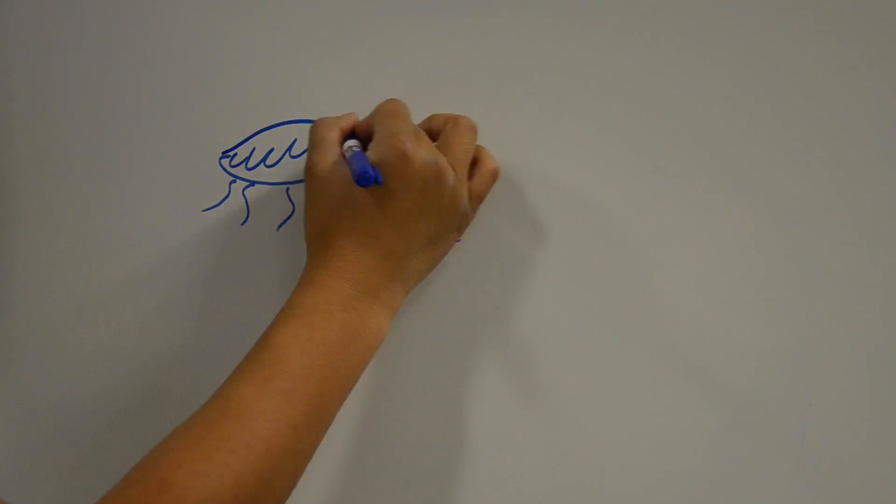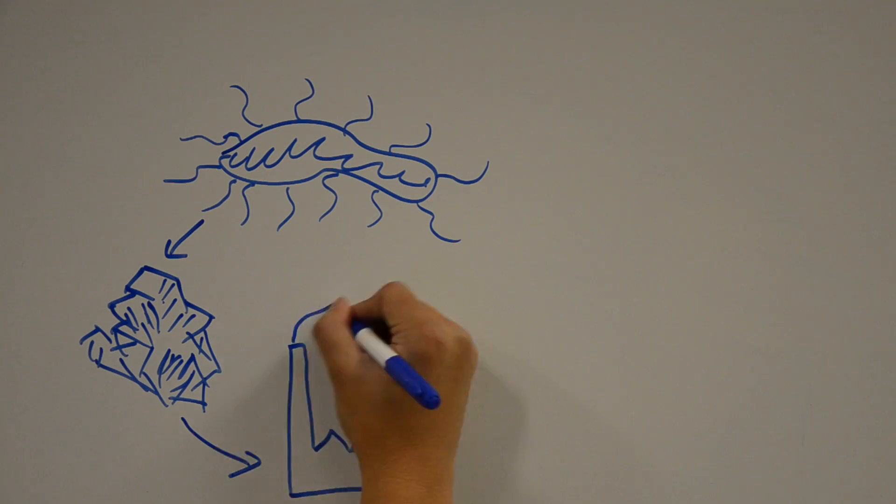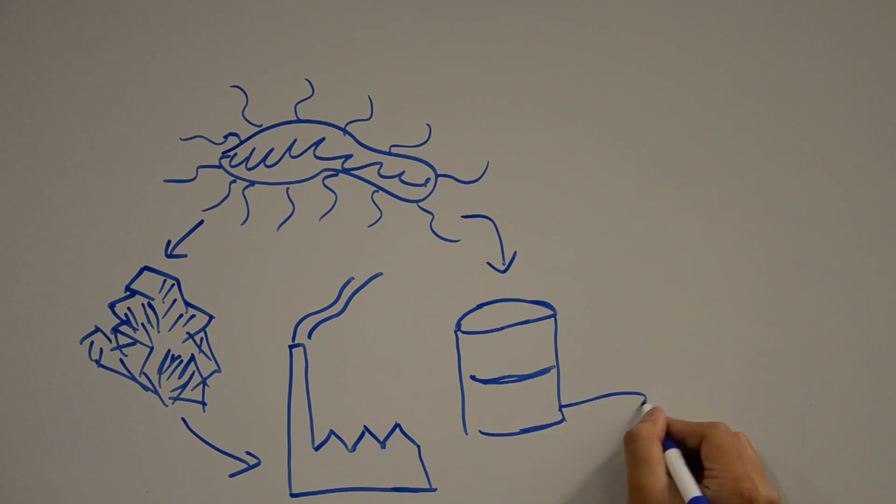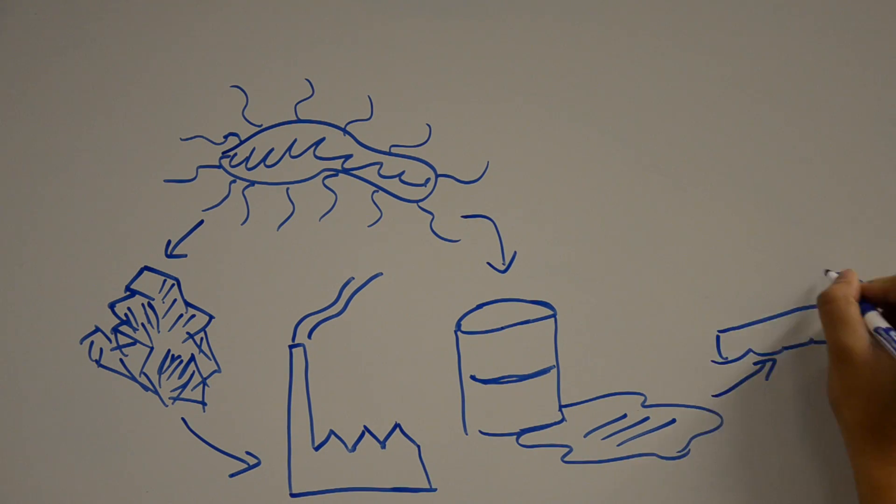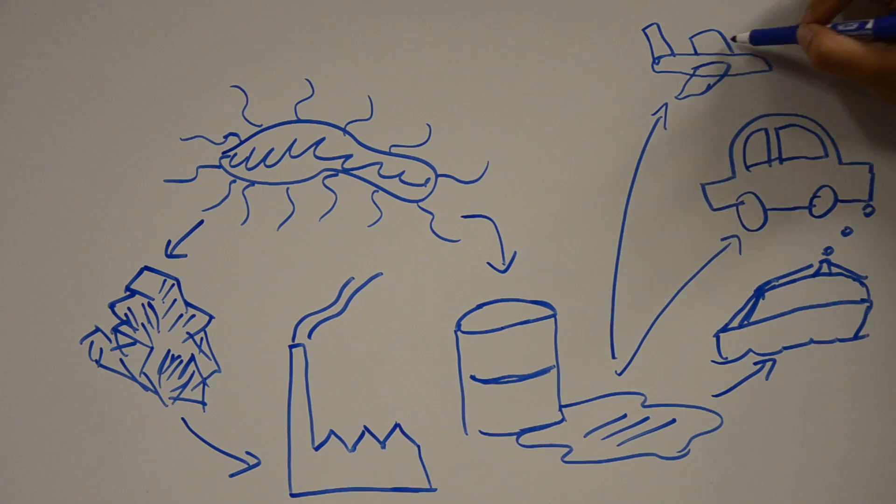So, why do we care? Well, A. ferrooxidans is in reality a very important bacteria. We use it to make desulfurized coal and crude oil due to its ability to reduce sulfur as well as iron. It thus makes our fuels burn cleaner.